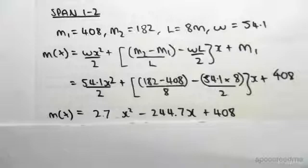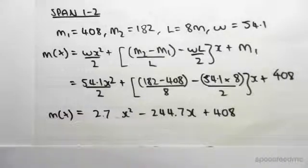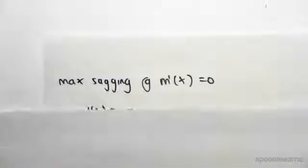The first point of interest is going to be the maximum sagging value. So we're going to say that the maximum sagging occurs at M dash of x equals zero.